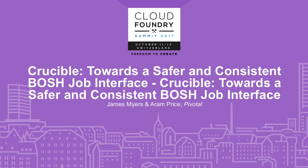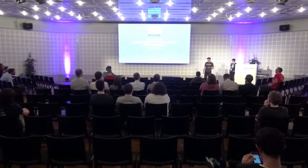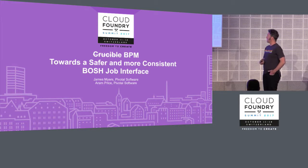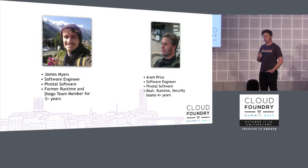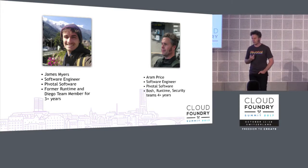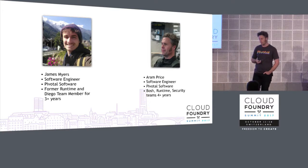So originally this was titled Crucible, towards a safer and more consistent BOSH job interface. The lawyers told us we couldn't use that name, though, so it's now called BPM. That's the release you can find on GitHub. I'll be presenting with James. We're both software engineers at Pivotal. I've been there for about four years. I've done stints on runtime, on BOSH, many other teams. Jim's worked on Diego most recently.